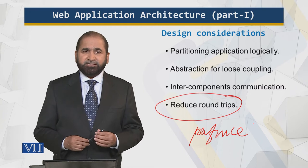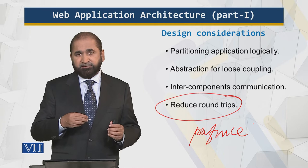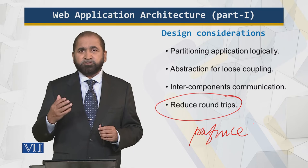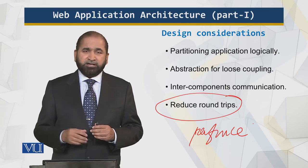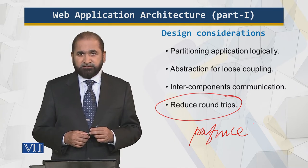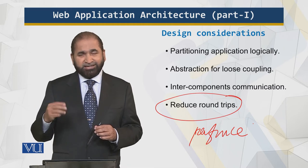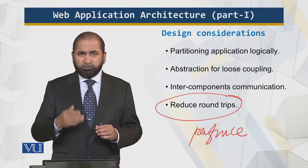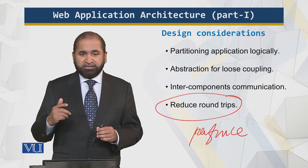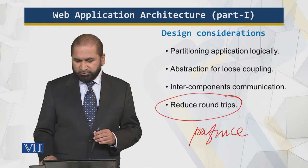Reduce round trips — this is basically about performance. You fetch something from the web server or for the client, and then you go and fetch it again and again. Reduce those round trips because the server could be at the other end of the planet, given the distributed database nature. Fetch whatever is required in one go, because reducing round trips gives you better performance.